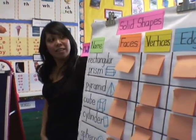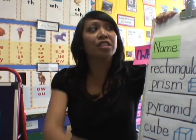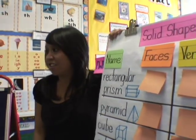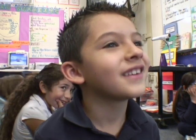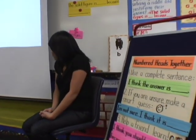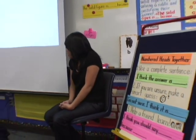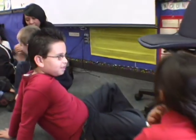Emily: we can use the faces. Josue, what other attribute can we use to describe a solid figure? We can use edges to describe solid shapes. Today we used the numbered heads together strategy to help us learn from one another. Turn to your partner and tell them: what did you like best about this strategy?